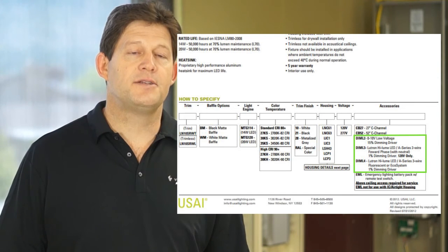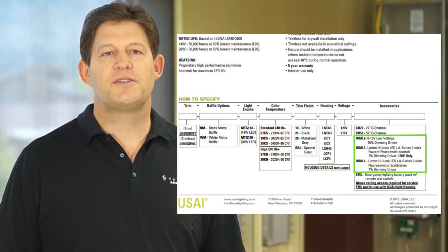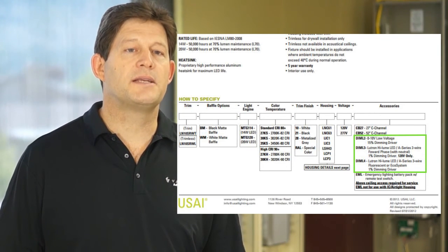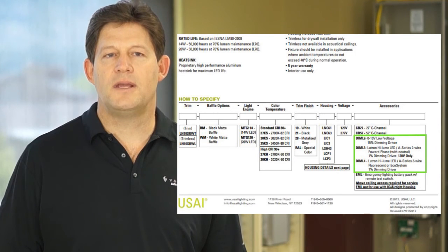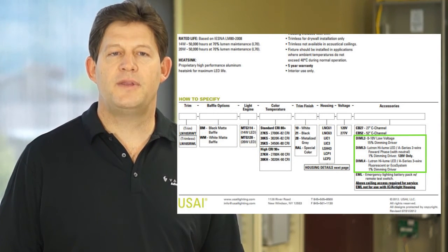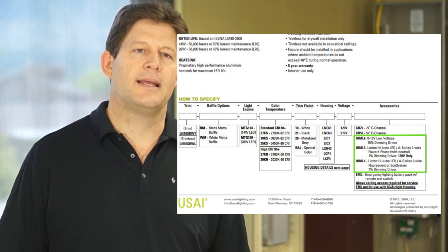If the dimming technology is already specified, it's simply a matter of selecting the appropriate dimmer. If you have specification influence, you can make some value judgments. In this case, the 0 to 10-volt dimmer has a dimming floor of 15% versus 1% with the other two, so I would rule that option out immediately.